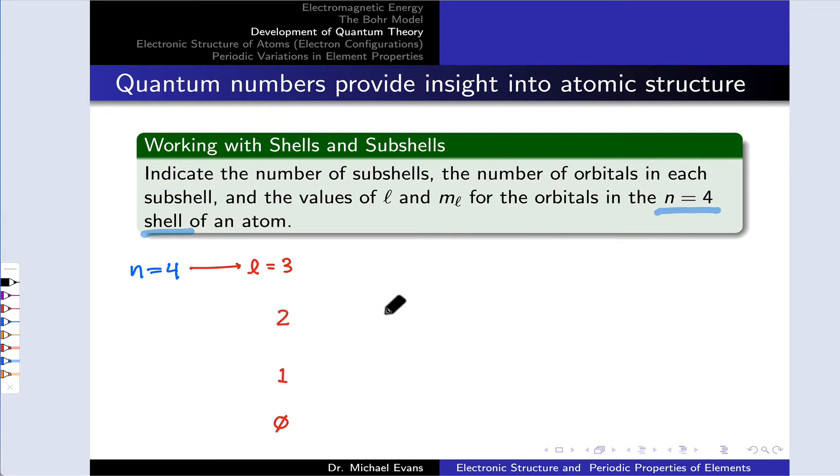and 3, since the value of L must be less than n. And we can look at each L value, which is a corresponding subshell, S, P, D, and F, and ask how many orbitals we have within each subshell based on constraints in the value of m sub L. So for example, in the L equals 0 subshell, the only possibility is m sub L equal to 0, since m sub L must be between negative L and positive L, and when L equals 0, m sub L's only possible value is 0. So there's one orbital in the 4s subshell.